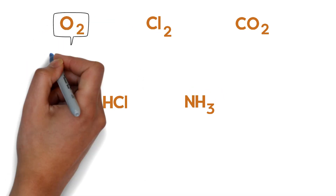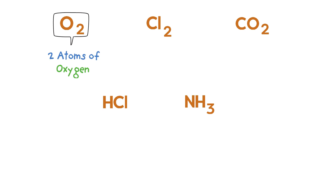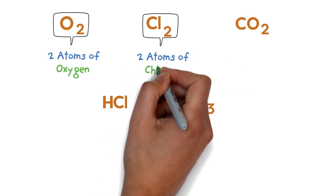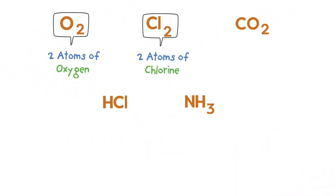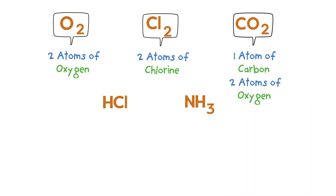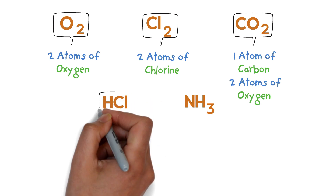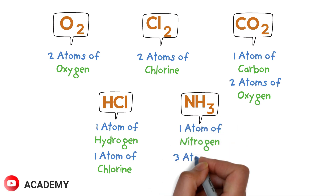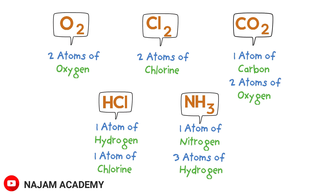In oxygen gas there are two atoms of oxygen, so it is a molecule of oxygen gas. In chlorine gas there are also two atoms of chlorine, so it is a molecule of chlorine gas. In carbon dioxide gas there is one atom of carbon and two atoms of oxygen. In HCl there is one atom of hydrogen and one atom of chlorine. In NH3 there is one atom of nitrogen and three atoms of hydrogen.